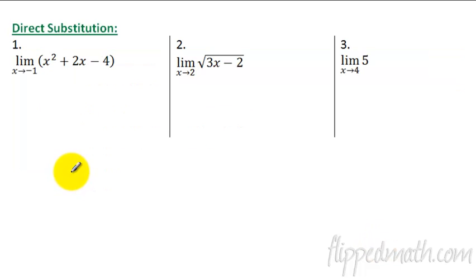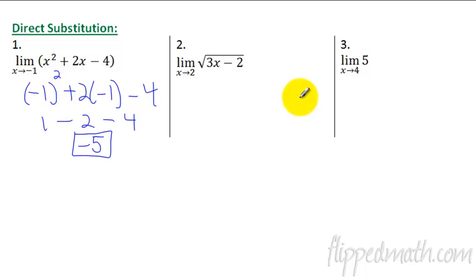First off, direct substitution. Watch how easy this is. All we do is you just take the x value that it's approaching and you just try to plug it in. Okay, because if the graph exists at negative 1, then remember a limit is just a y value. So we go like this. Negative 1 squared plus 2 negative 1 minus 4. That's it. Plug it in. Simplify. We get 1 minus 2 minus 4. And 1 minus 2 minus 4 is negative 5. Done with that one. Easy direct substitution.